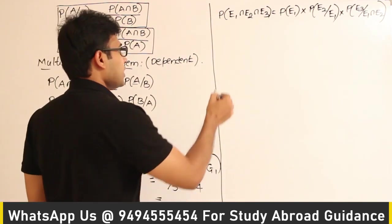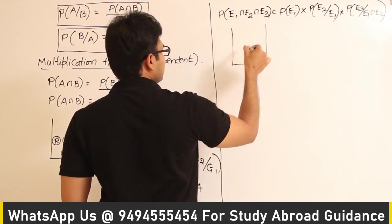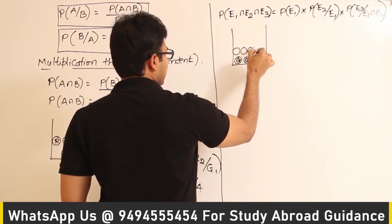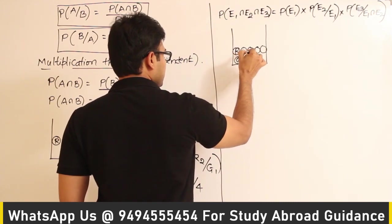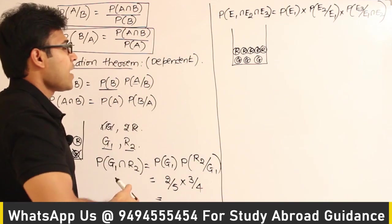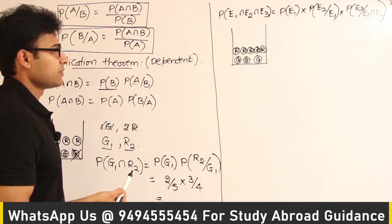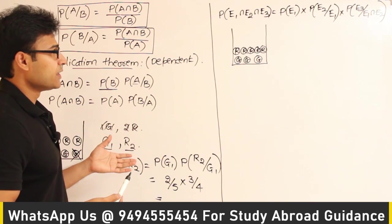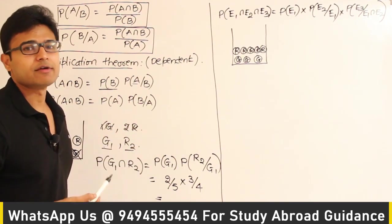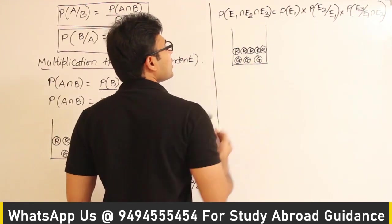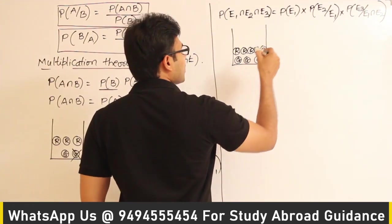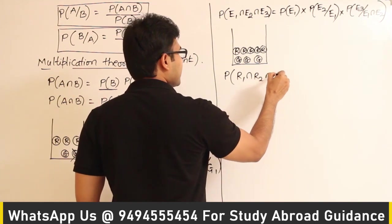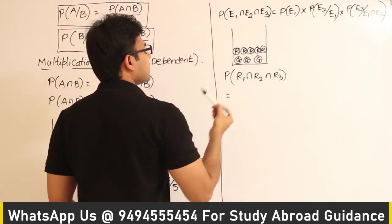Let's see an example. Assume we have 3 green balls and 5 red balls in a bag, for 8 total. I want to draw 3 balls without replacement, one by one. What is the probability that all three balls drawn are red? So I am interested in the probability that the first ball is red, the second ball is red, and the third ball is red.